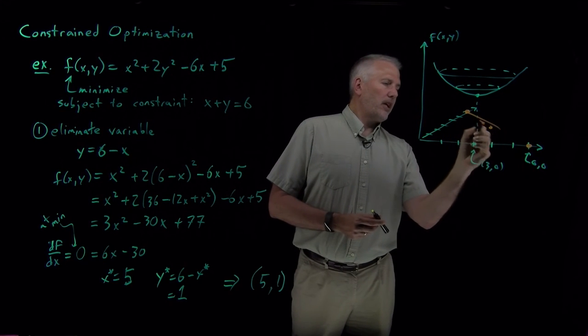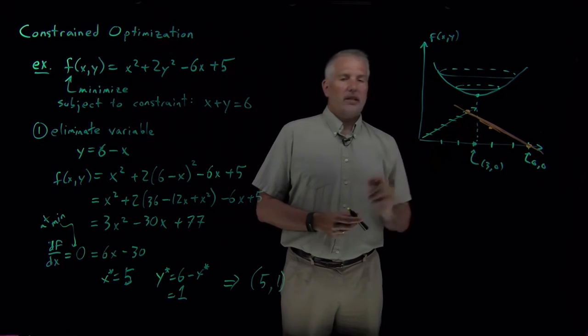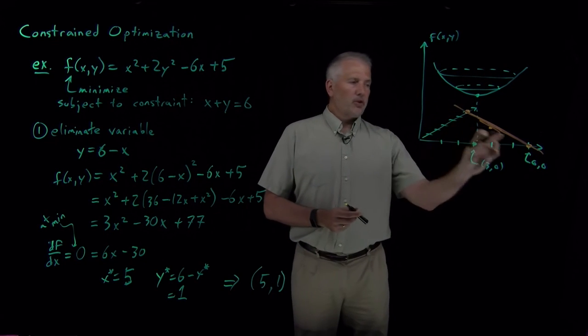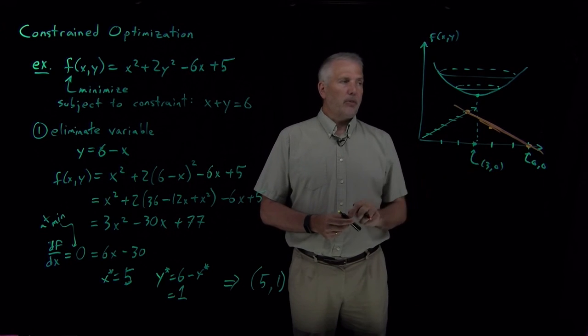So any point on the line connecting these points, those are x and y values that add up to 6. So those are the x and y values that obey the constraint.